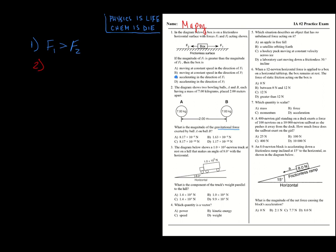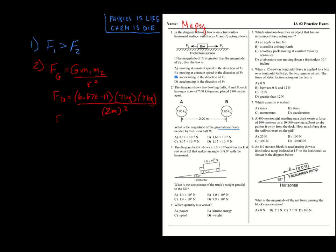For number two, we use the universal gravitation equation. Make sure you know how to use the E button on the calculator. We plug in G times seven kilograms times seven kilograms, divided by the distance of two meters squared — don't forget to square it in the denominator. If you calculate this correctly, you should get 8.17 times 10 to the negative tenth newtons.